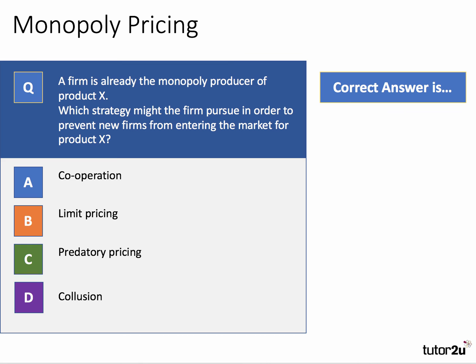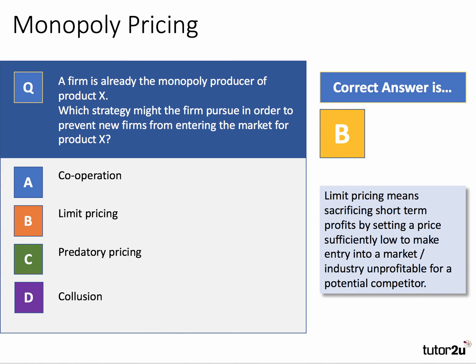The correct answer is B — limit pricing. The main choice is between B and C: limit pricing and predatory pricing. Limit pricing is when a firm sacrifices short-term profits by cutting their price sufficiently low to make entry into the market unprofitable for a potential competitor. Predatory pricing is when you price deliberately below cost to drive out an existing competitor. Collusion is when existing firms agree a price cartel to fix a high price and increase joint profits. So the correct answer is limit pricing — option B.